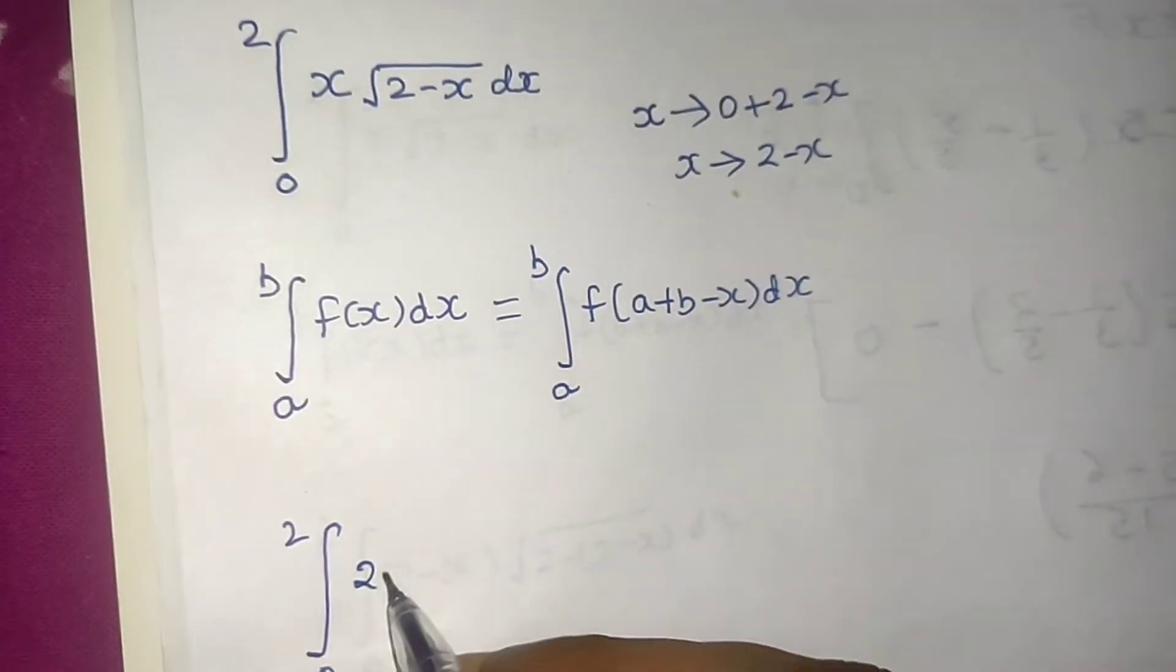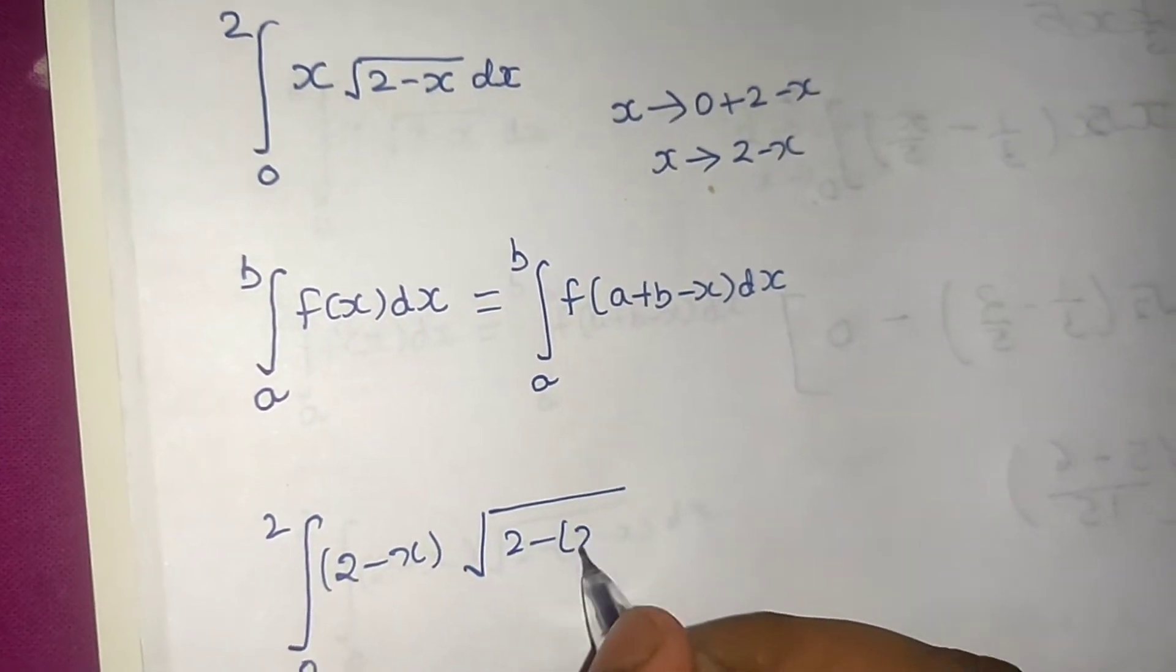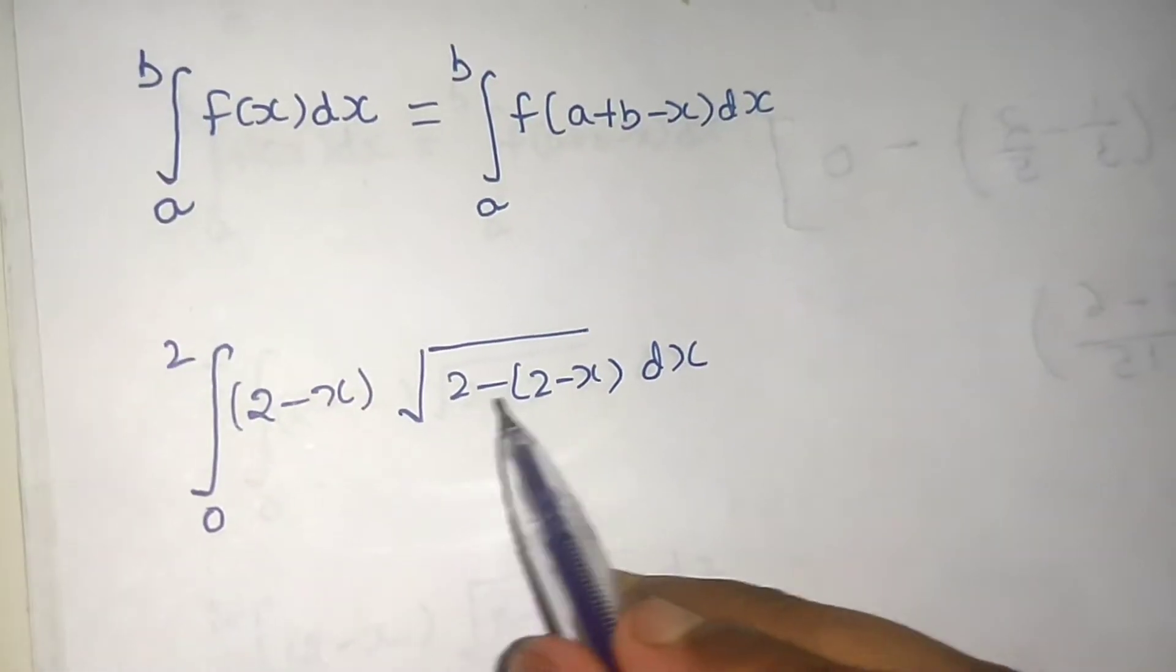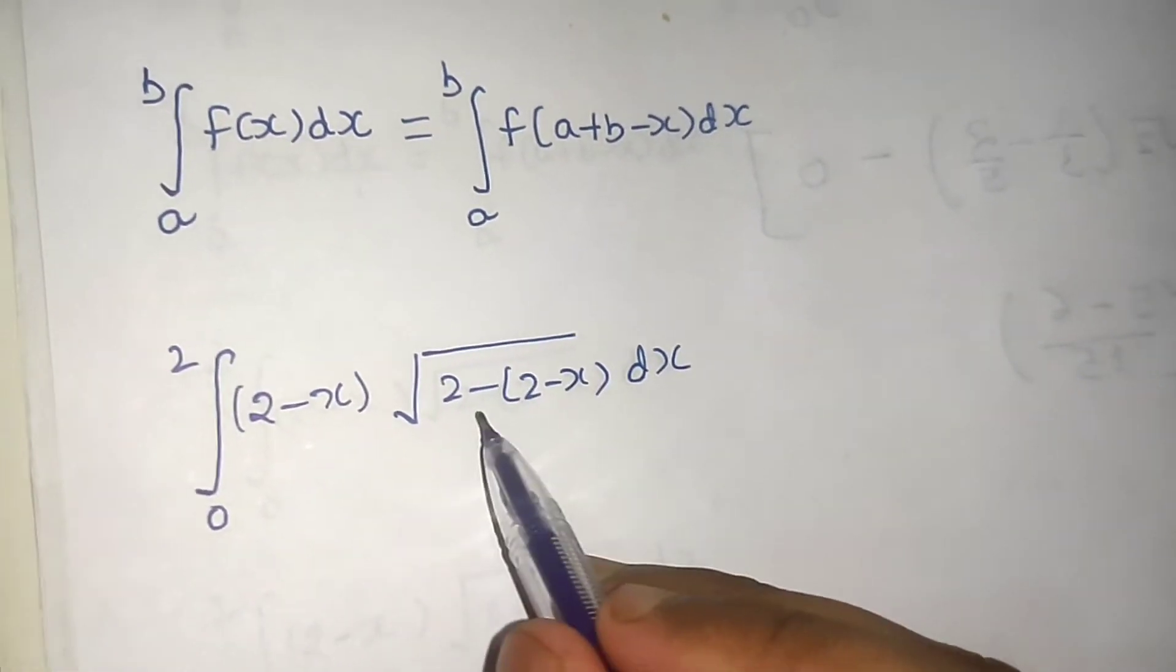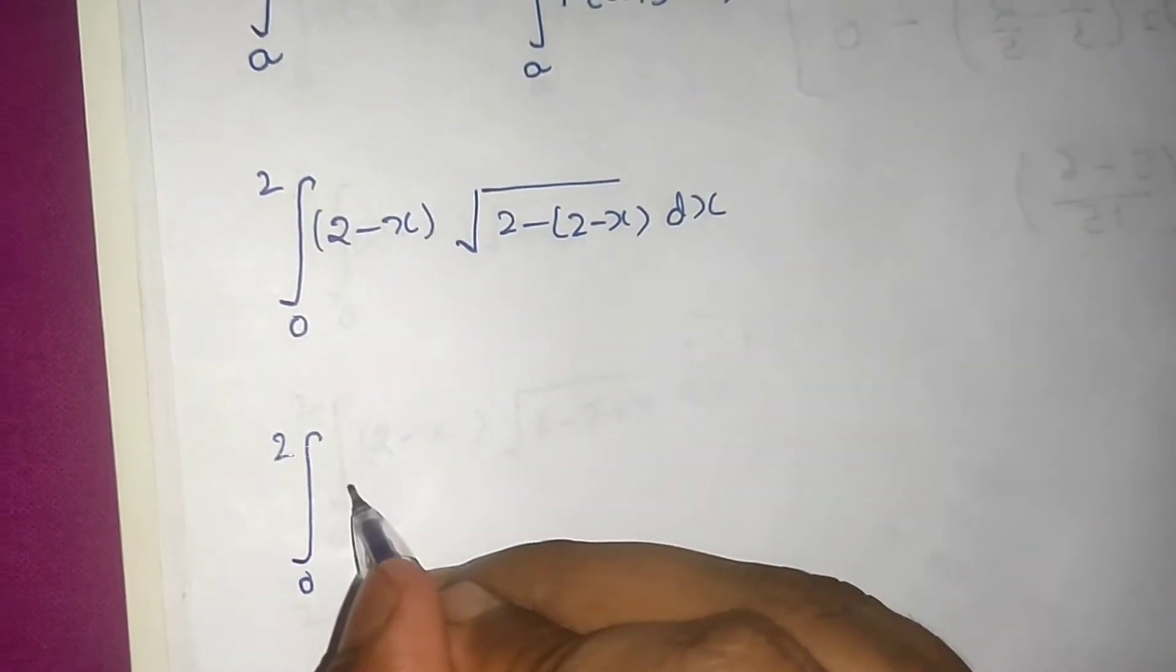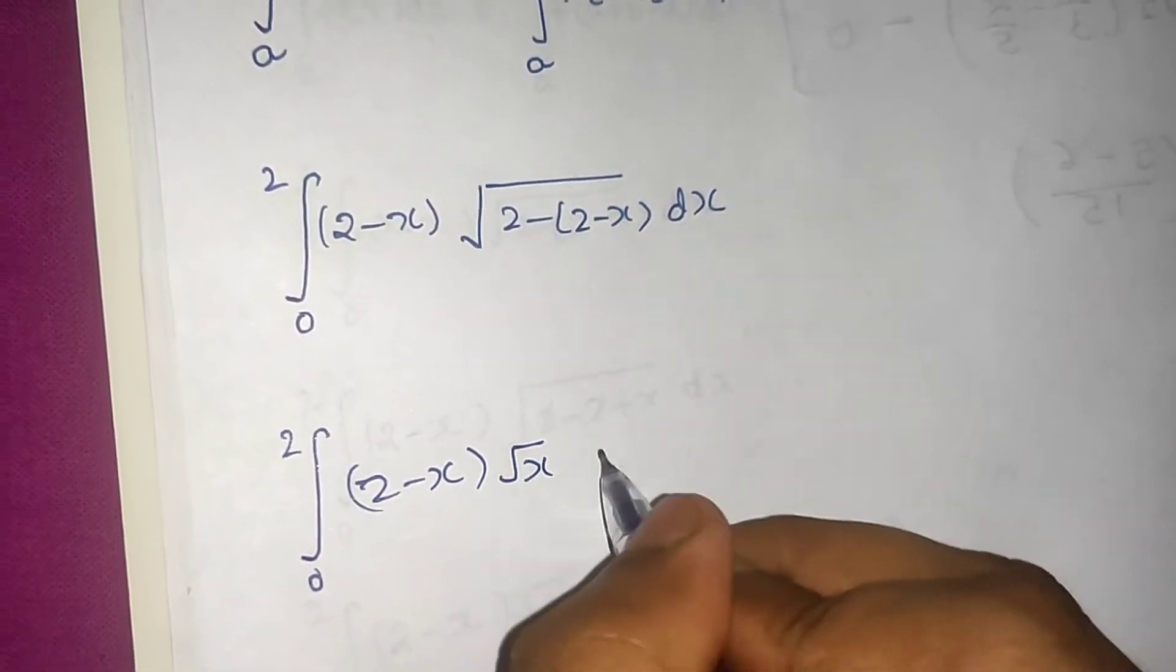I will do so. So 2 minus x under root of 2 minus replace x by 2 minus x dx. Now if you see carefully 2 minus 2 will cancel and minus minus plus root x will be there. So 0 to 2, 2 minus x multiplied by root x dx.